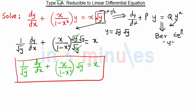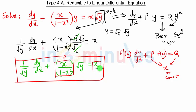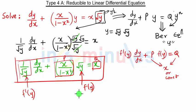This is of the form f'(y)·(dy/dx) + p·f(y) = q, where p and q are functions of x or constants. Here, x/(1 − x²) is our p, x is our q, 1/√y is our f'(y), and √y is our f(y).